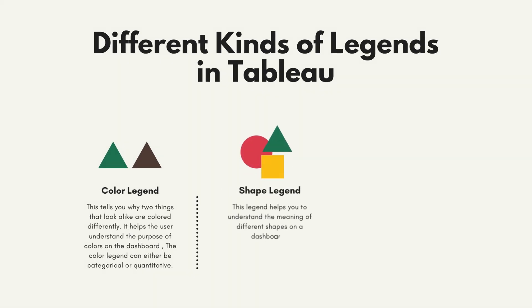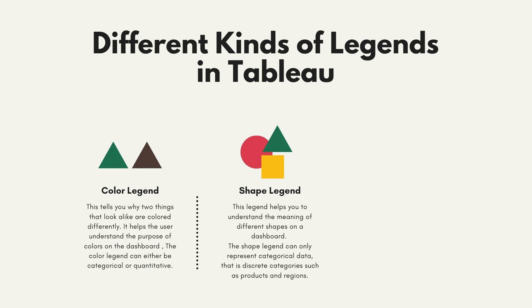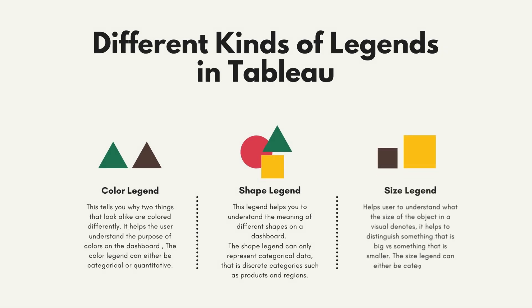Shape legend — this legend helps you to understand the meaning of different shapes on a dashboard. The shape legend can only represent categorical data, that is discrete categories such as products or regions. Finally, the size legend. This helps the user to understand what the size of the object on a visual denotes — to distinguish something that is big versus something that is small. The size legend can either be categorical or quantitative.